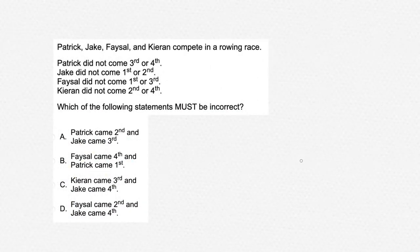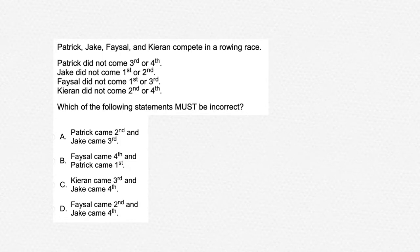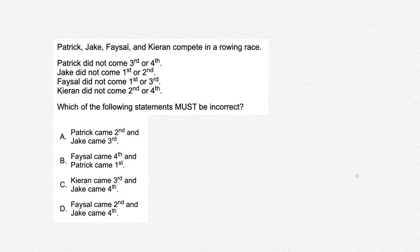Patrick, Jake, Faisal and Kirian compete in a rowing race. Patrick did not come 3rd or 4th. Jake did not come 1st or 2nd. Faisal did not come 1st or 3rd. Kirian did not come 2nd or 4th. Which of the following statements must be false? For these types of questions, it is easiest to draw up a table and represent your information.